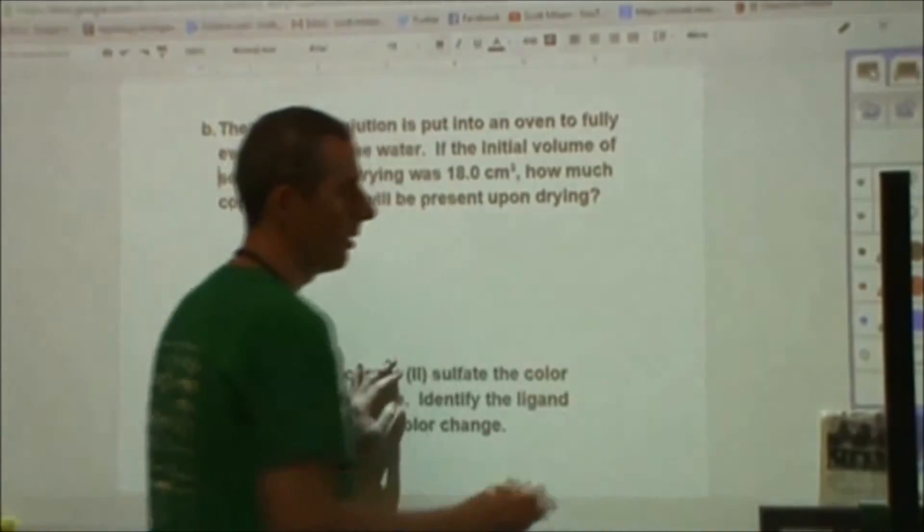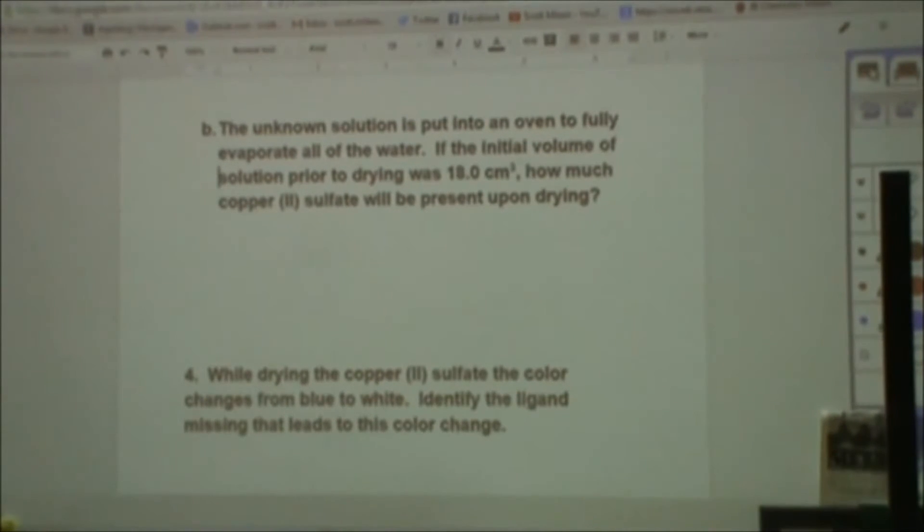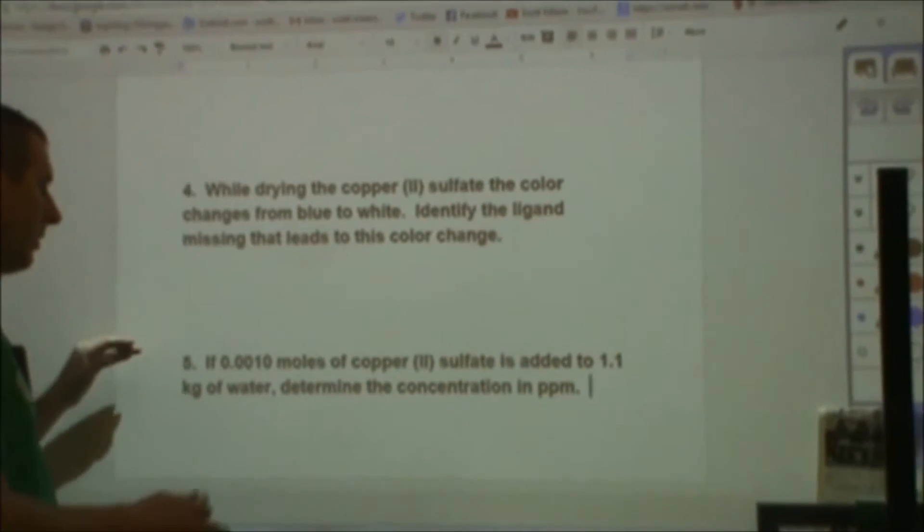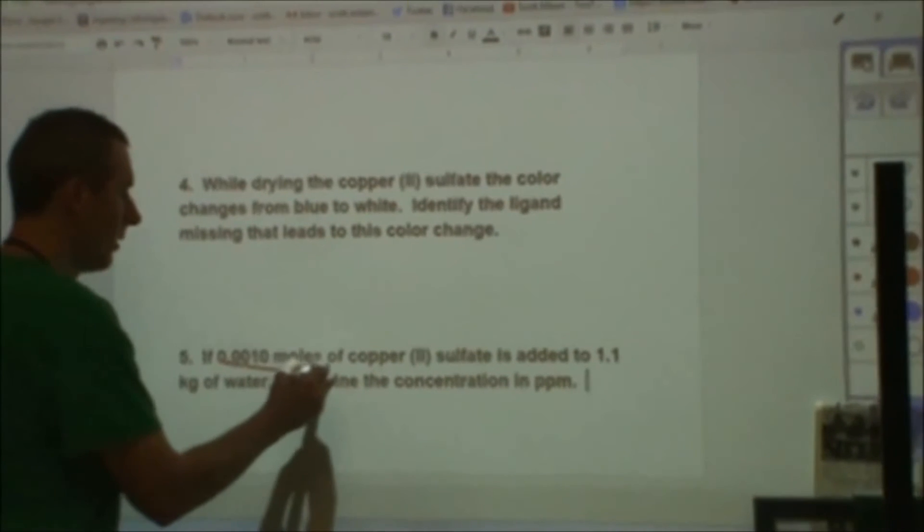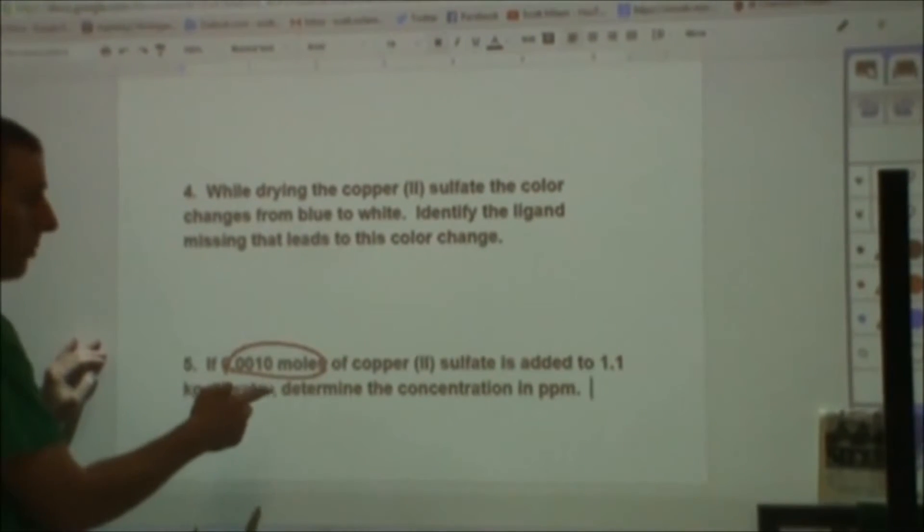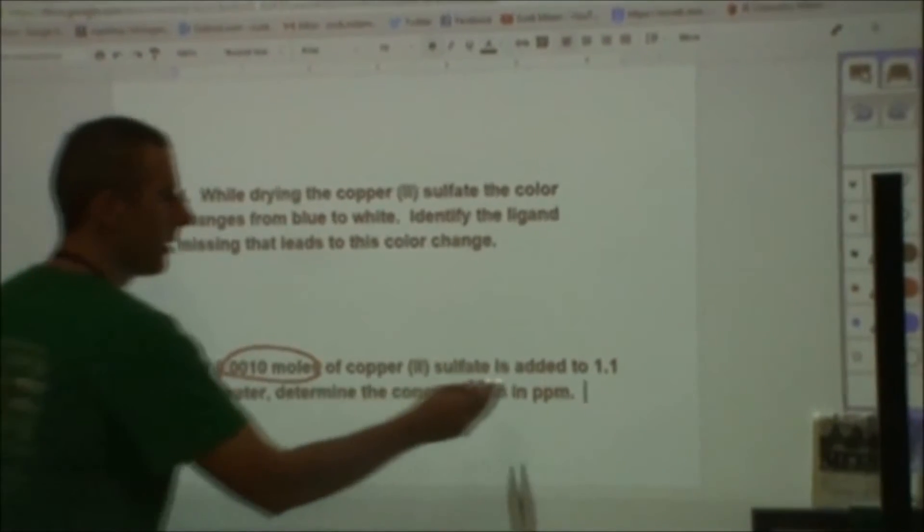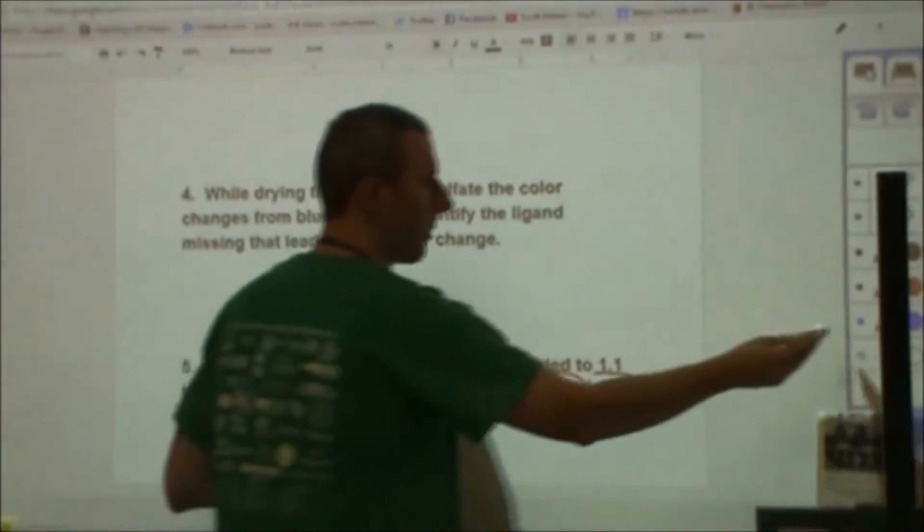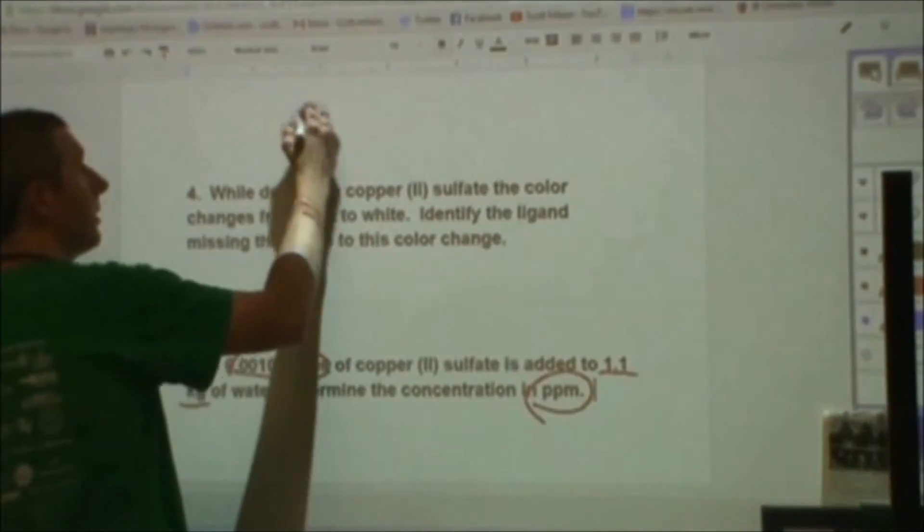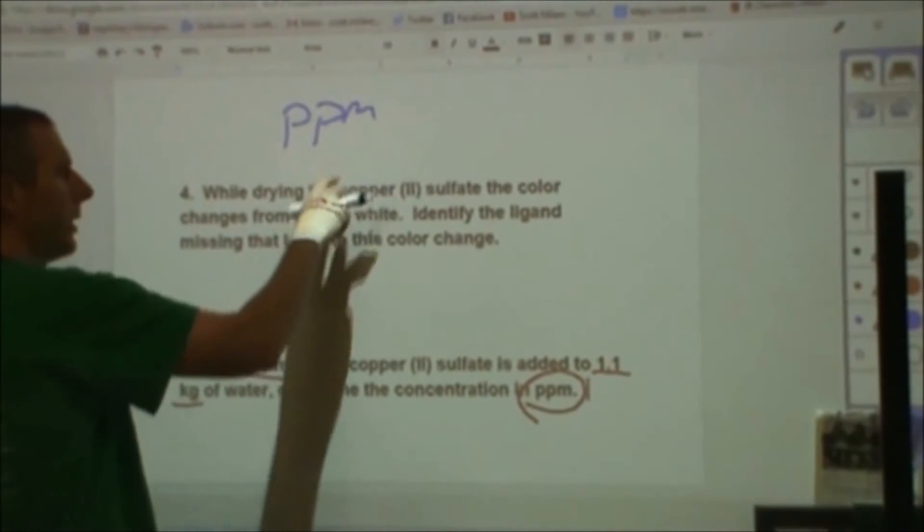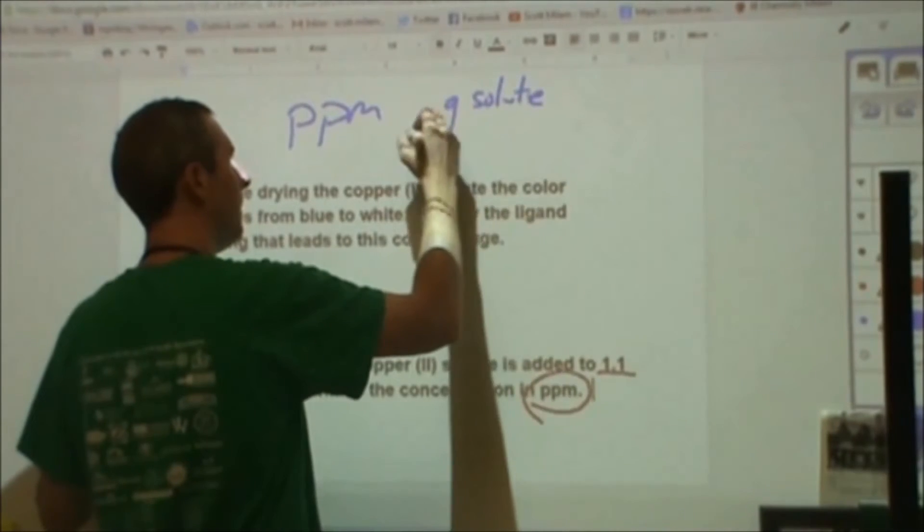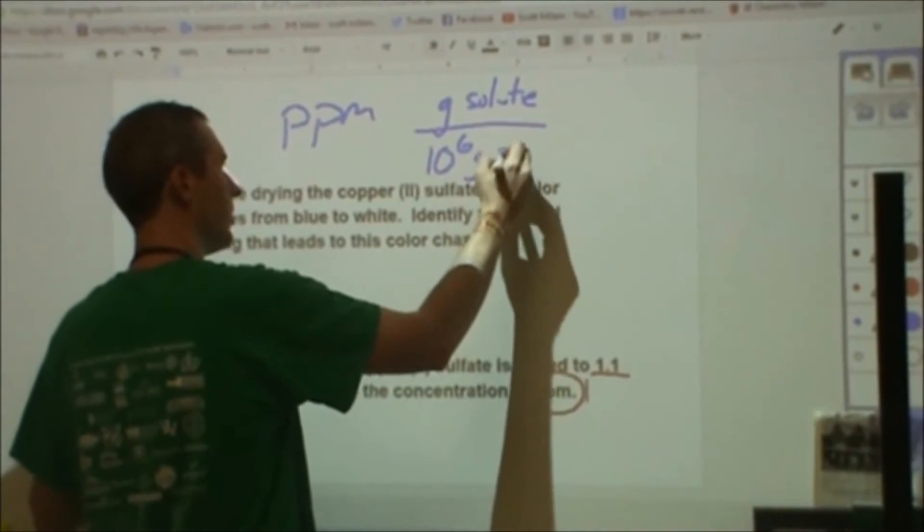The last question on here is another concentration question. This one we no longer need the information from above. It gives us an amount of copper(II) sulfate, 0.0010 moles. And we add it to 1.1 kilograms of water. It says find the concentration in parts per million. Parts per million is going to be how many grams of solute there are, if you had had a million grams of solution.